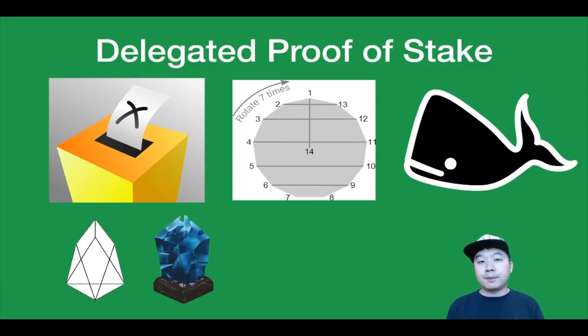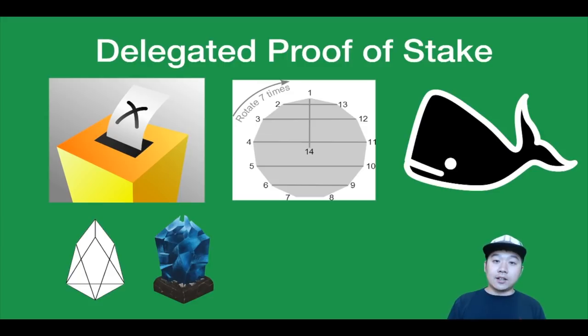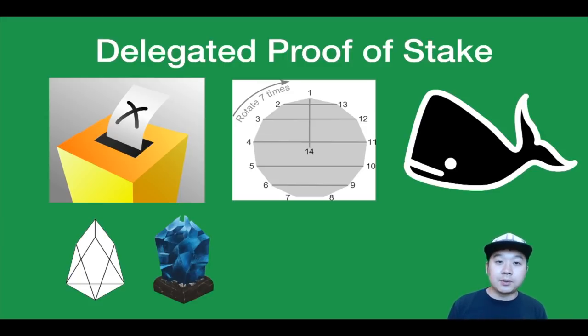We've seen this as a problem in several projects that implement this approach. Some famous projects that implement delegated proof of stake are EOS, Bitshares, Steem, Lisk, and Ark — as you can see, these are mostly Dan Larimer projects, as he loves to use this approach.